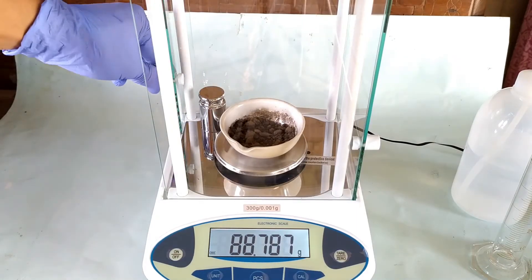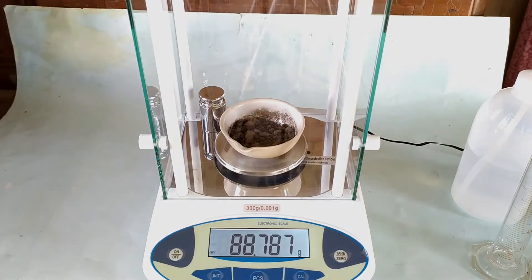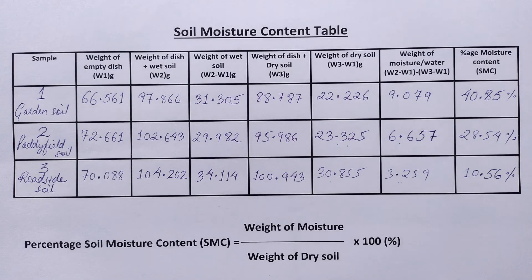Repeat the same process with the remaining 2 samples of soil. Tabulate the initial weights, final weights, and the difference between initial and final weights of all 3 samples of soil as shown in the table. The difference between the initial and final weights for each sample will give the soil moisture content in grams for that sample. To determine the soil moisture content in terms of percentage of dry weight, the formula shown below the table may be used for each soil sample.